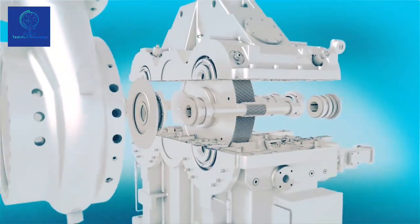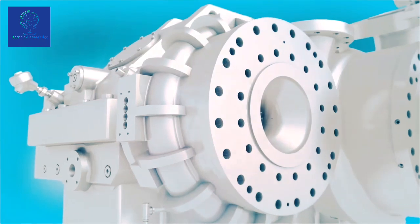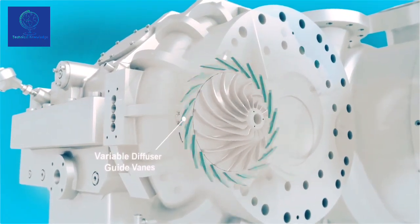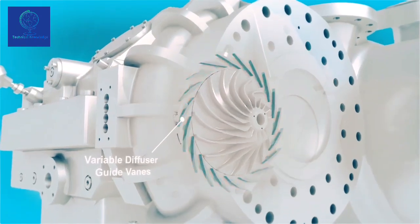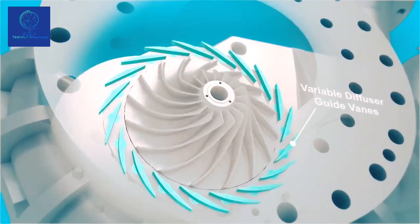To enhance performance, a number of other features are available, such as variable diffuser guide vanes, or DGVs, which can be added to complement impeller aerodynamics. Adjustable DGVs enable larger turndown, which ultimately results in wider process control without impairing efficiency, an ideal mix that is increasingly required by process designers.